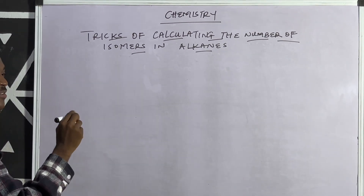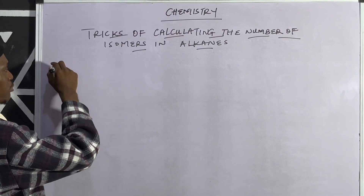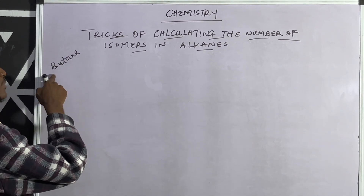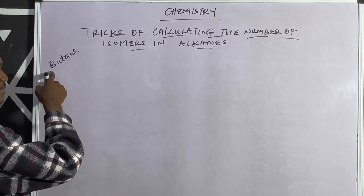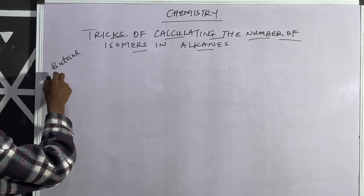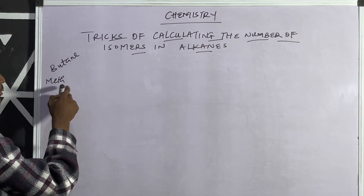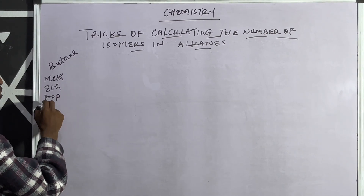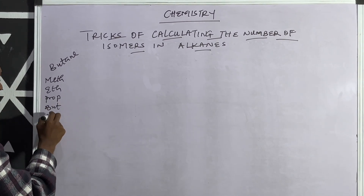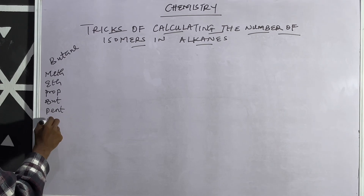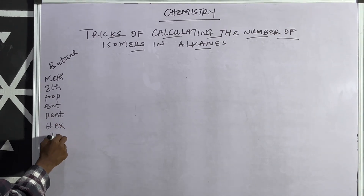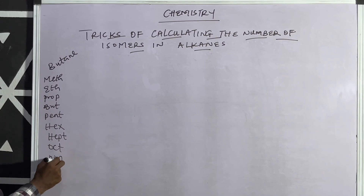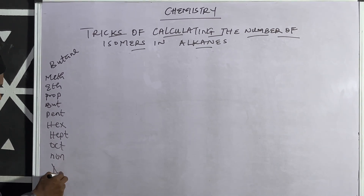Isomerism in alkanes starts from butane — remember that butane is the fourth member of the alkane series. The prefixes are: meth = 1 carbon, eth = 2 carbons, prop = 3 carbons, but = 4 carbons, pent = 5 carbons, hex = 6 carbons, hept = 7 carbons, oct = 8 carbons, non = 9 carbons, and dec = 10 carbons.